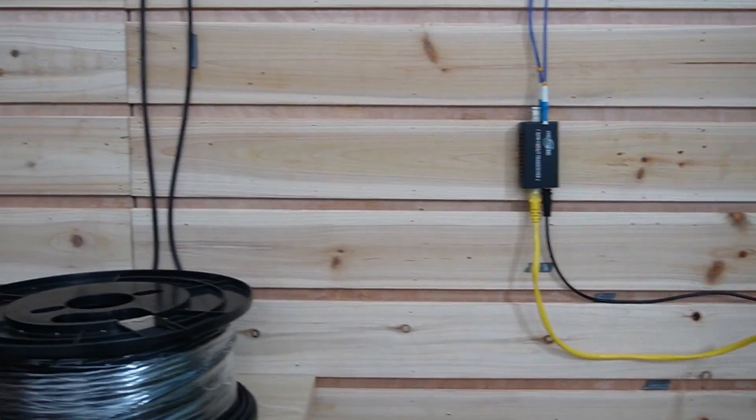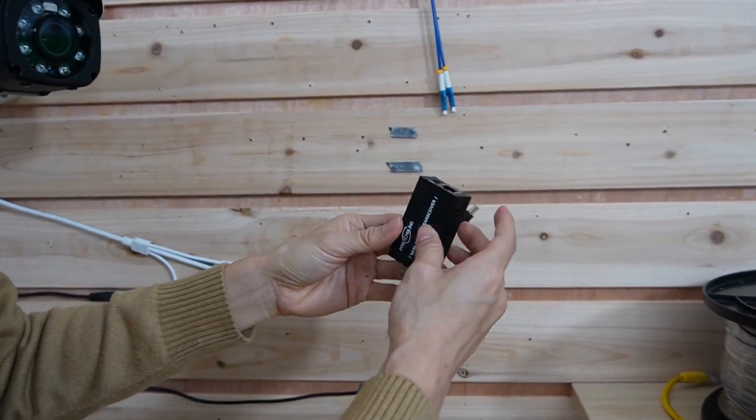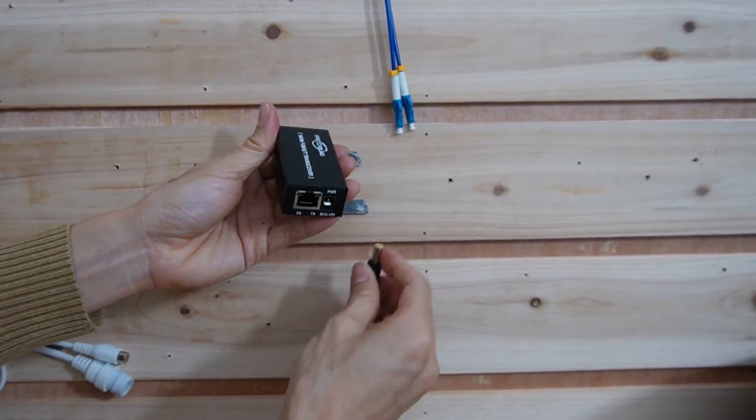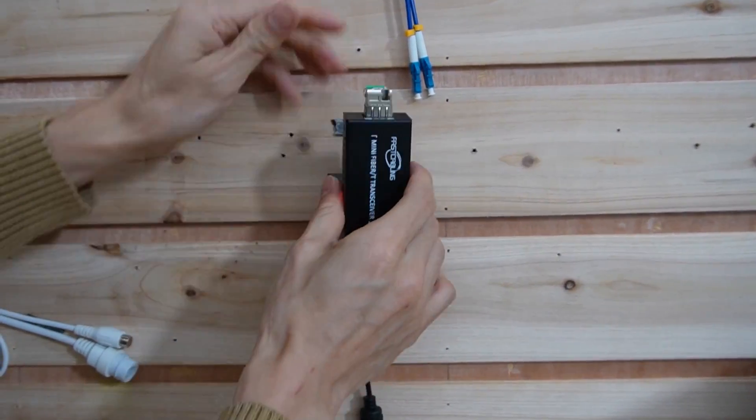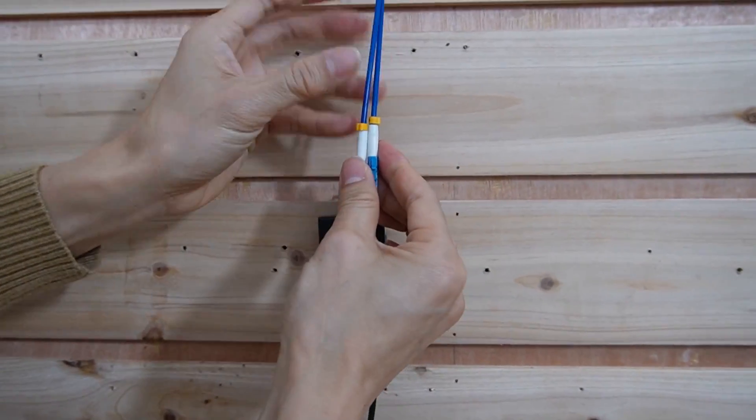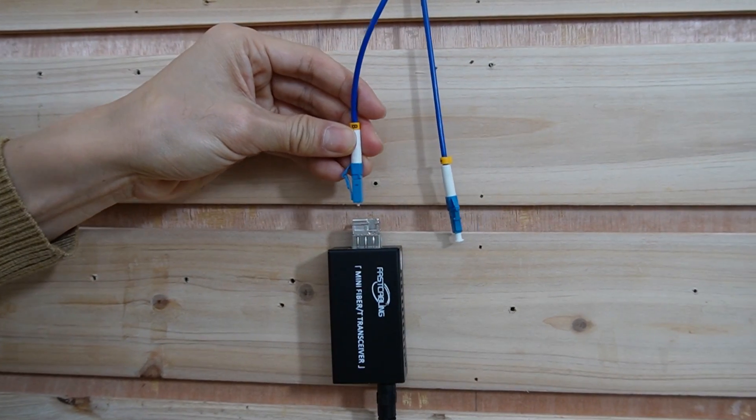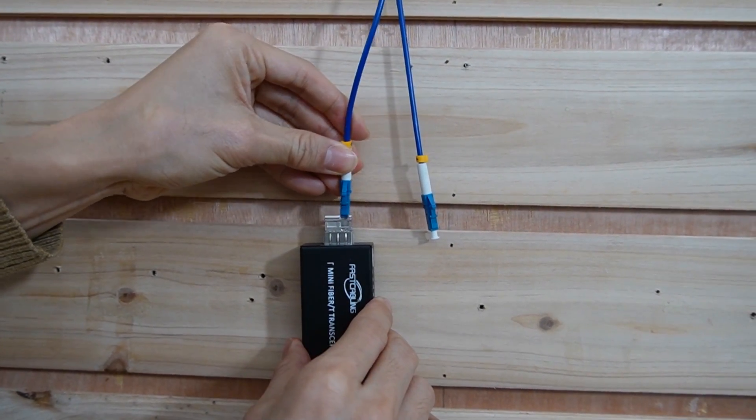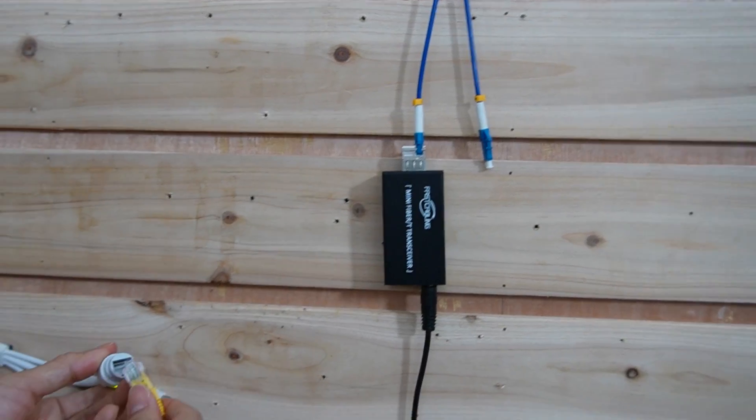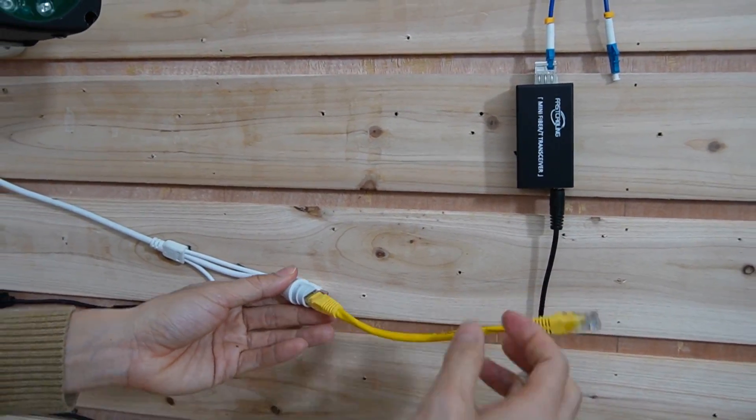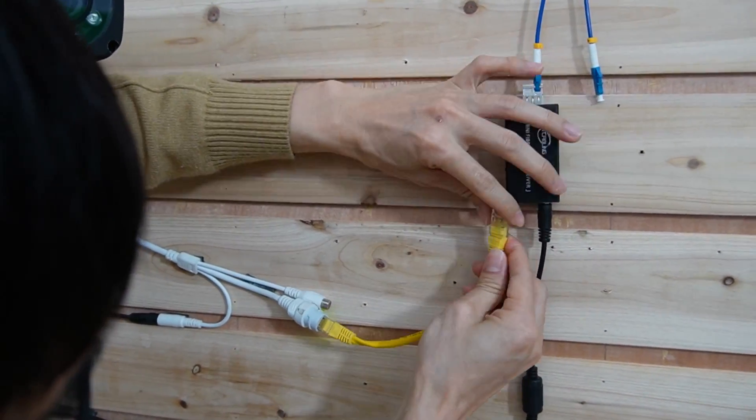We got another media converter. Also, we need to have power. And from here, we need to choose the same cable, also the cable with tape B. And we got a second short patch cord to link to the media converter.